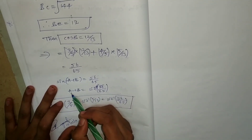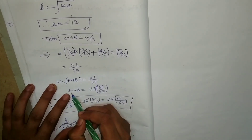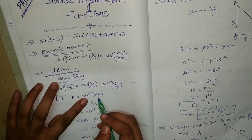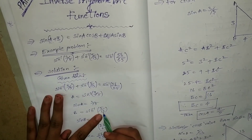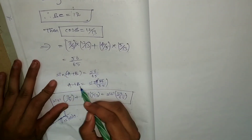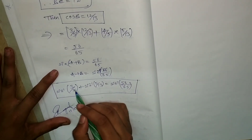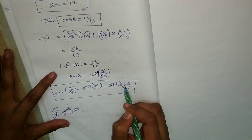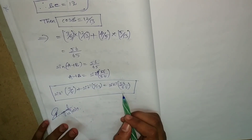Since sin a plus b equals sin c, applying sin inverse on both sides gives a plus b equals c. Therefore, sin inverse of 3 by 5 plus sin inverse of 5 by 13 equals sin inverse of 56 by 65. Hence LHS equals RHS, and it is proved.